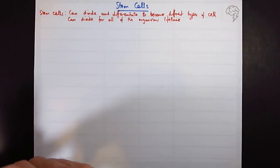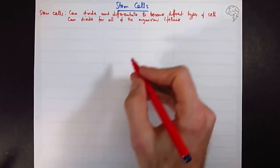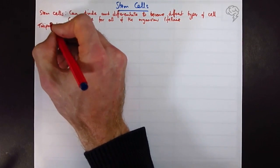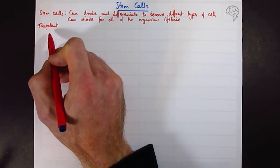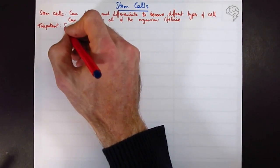So that's why stem cells are different. There's different types and we're going to look at them here. So let's look at totipotent stem cells. Toti is like total and potent is like potential. This has total potential to become any kind of cell from that organism.